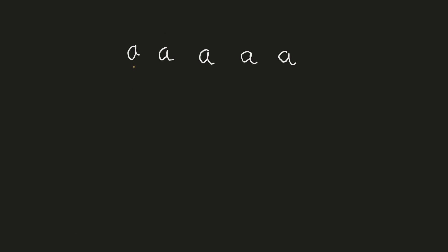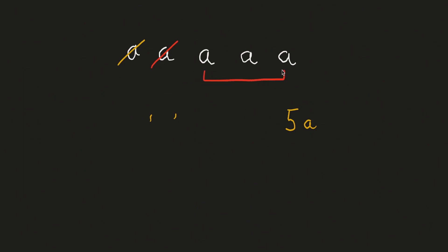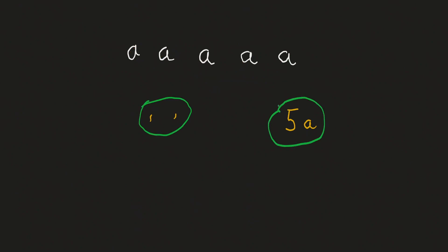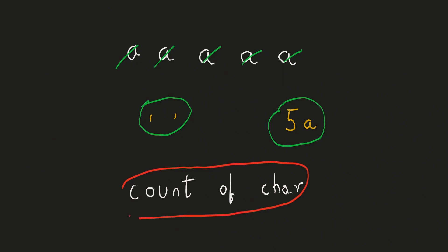Let's figure out some more properties of this operation. In this example we have 5 a's. When we apply the operation each time, one a is removed per operation. So after 5 operations, all a's are gone and the string becomes empty. Hence, to completely remove a character, the number of times we have to apply the operation will be the count of that character.